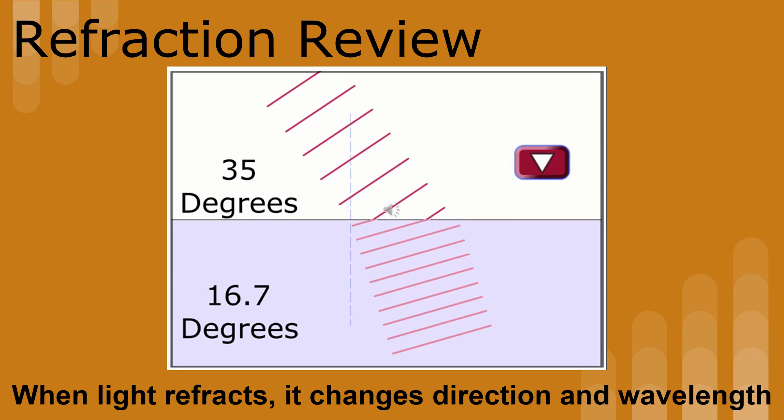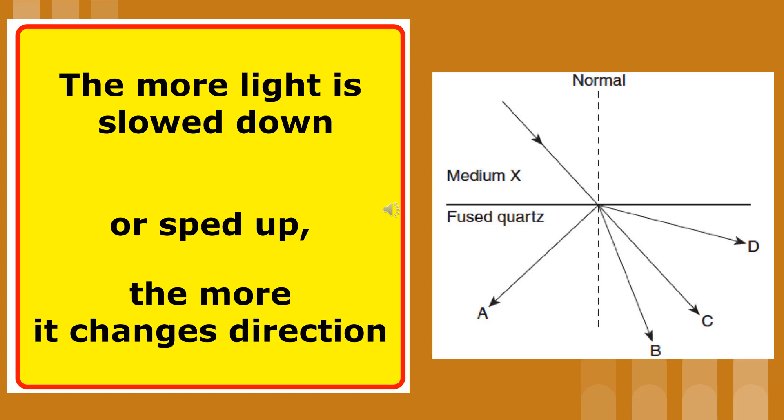When light refracts, it changes direction and wavelength. Light's change in speed is proportional to its change in wavelength. The more light is slowed down or sped up, the more it changes direction.